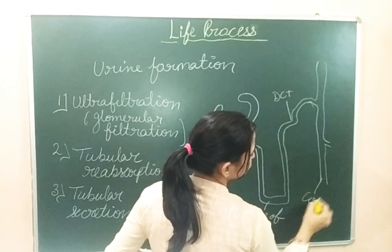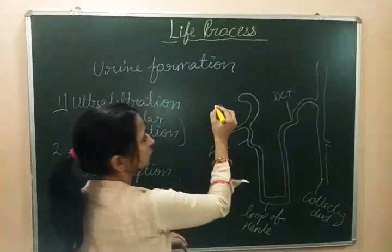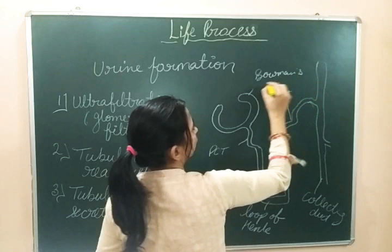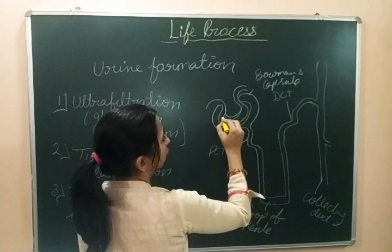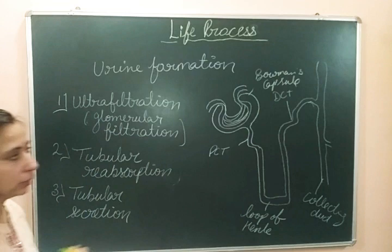This is the collecting duct, which collects the filtrate. And this part is our Bowman's capsule. Inside the Bowman's capsule, the duct of capillaries is coming in and leaving. This duct is known as the glomerulus.